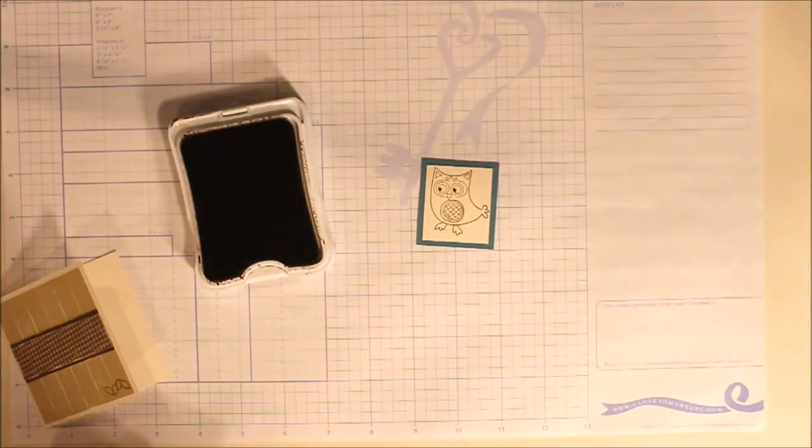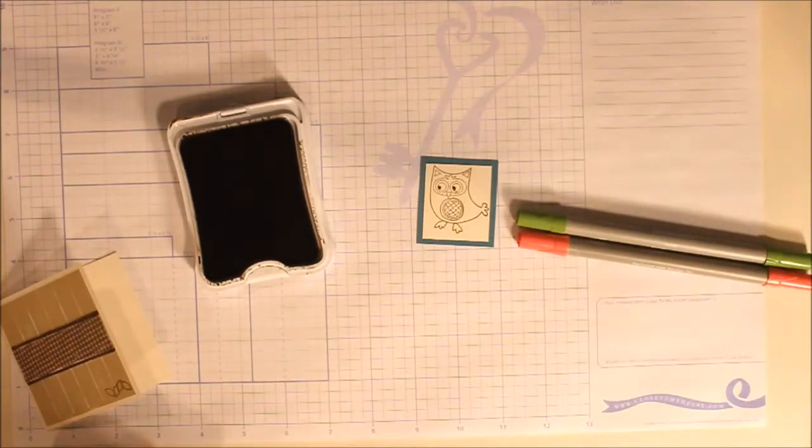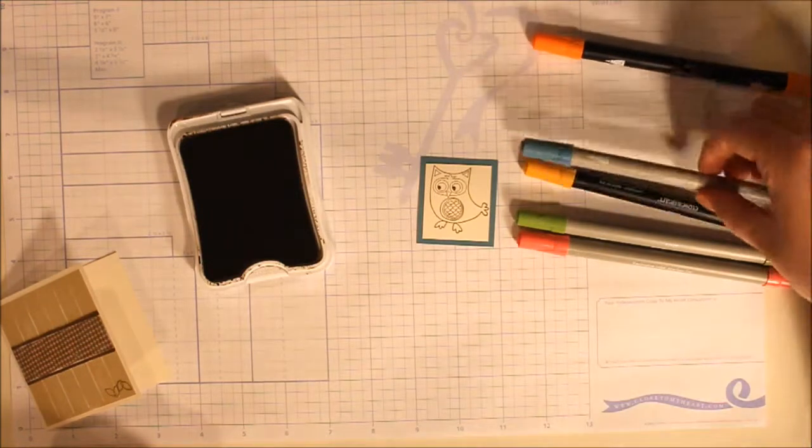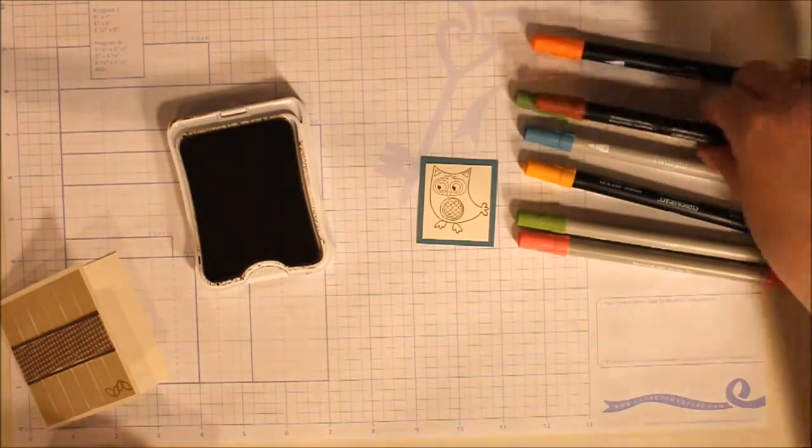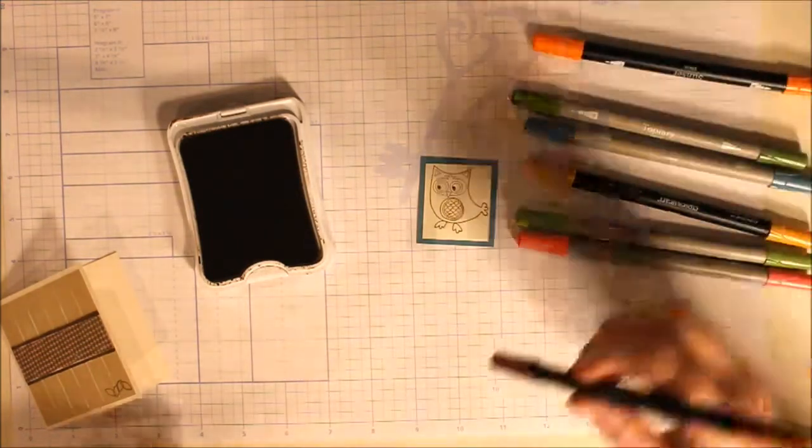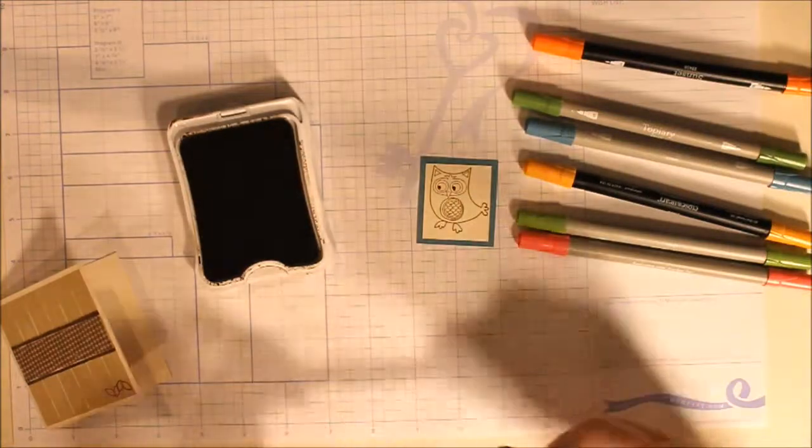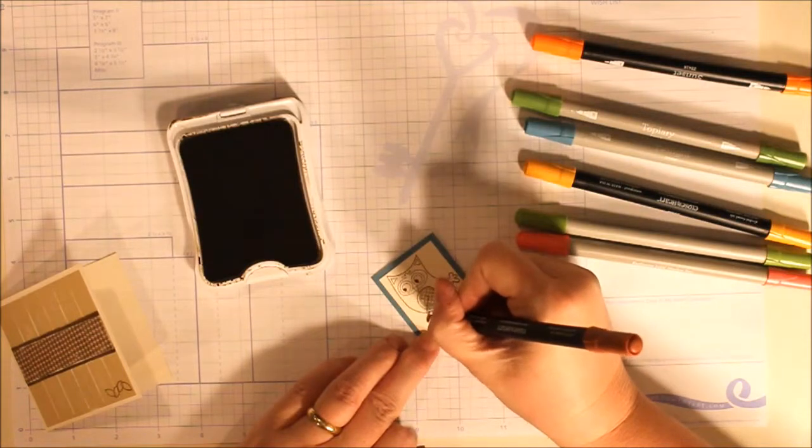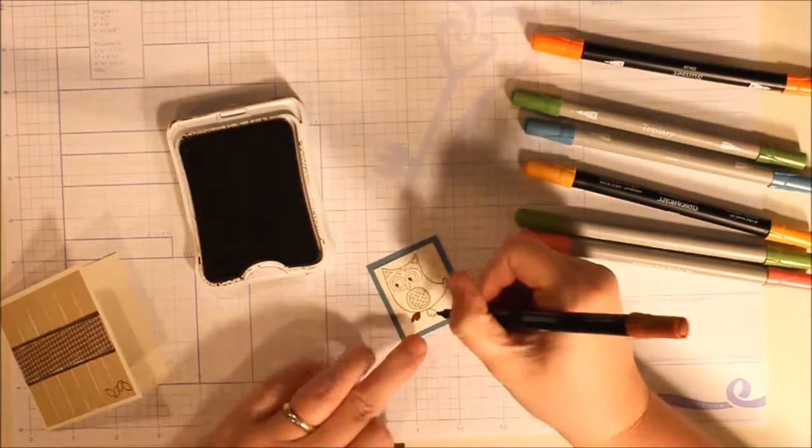I happen to have Smoothie, Pear, Gold Rush, Sunset, Twilight, Topiary, and Barn Red. So I'm just going to color a couple of these pieces in.